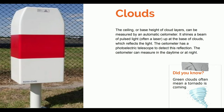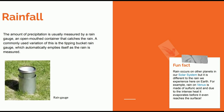Finally, we're talking about rainfall, which is one of the most common weather elements. It is measured using a rain gauge — a very simple instrument that provides very important information. It is an open-mounted container that catches the rain. A commonly used variation is the tipping bucket rain gauge, which automatically empties itself as the rain is measured. On screen we can see an image of a rain gauge and the tipping bucket rain gauge.